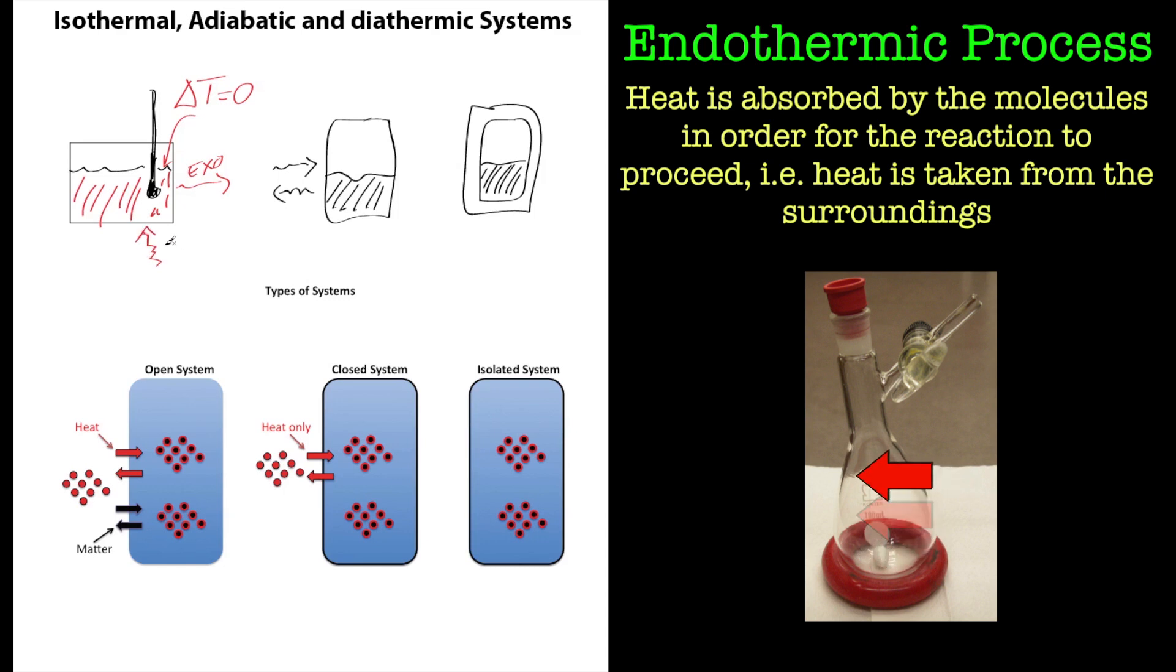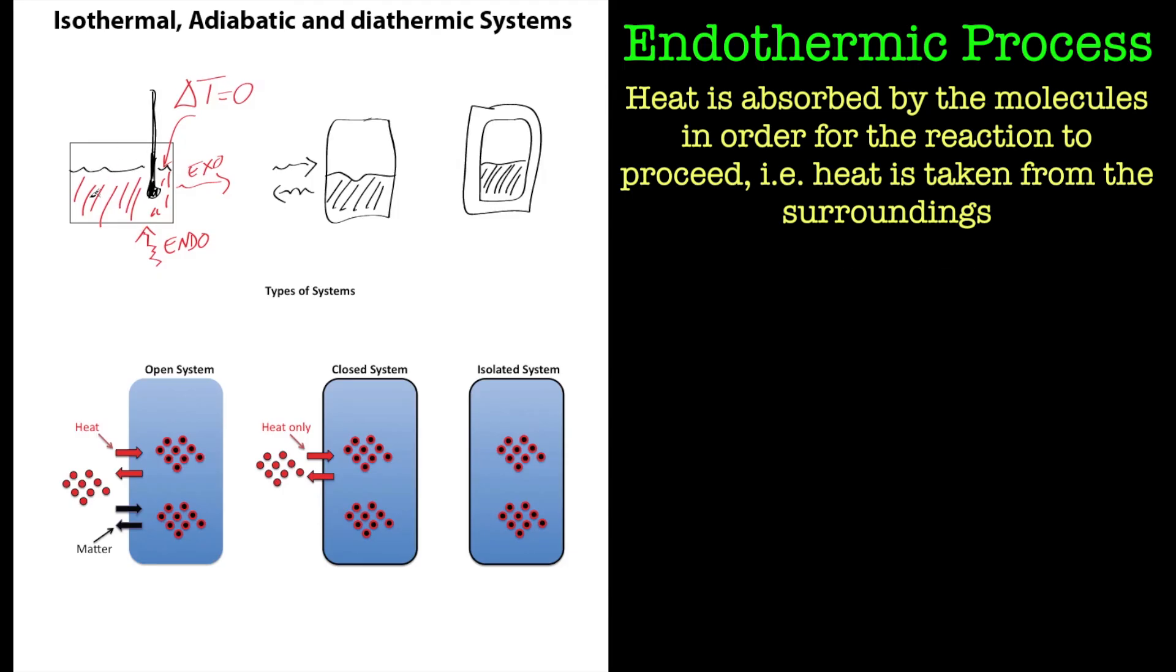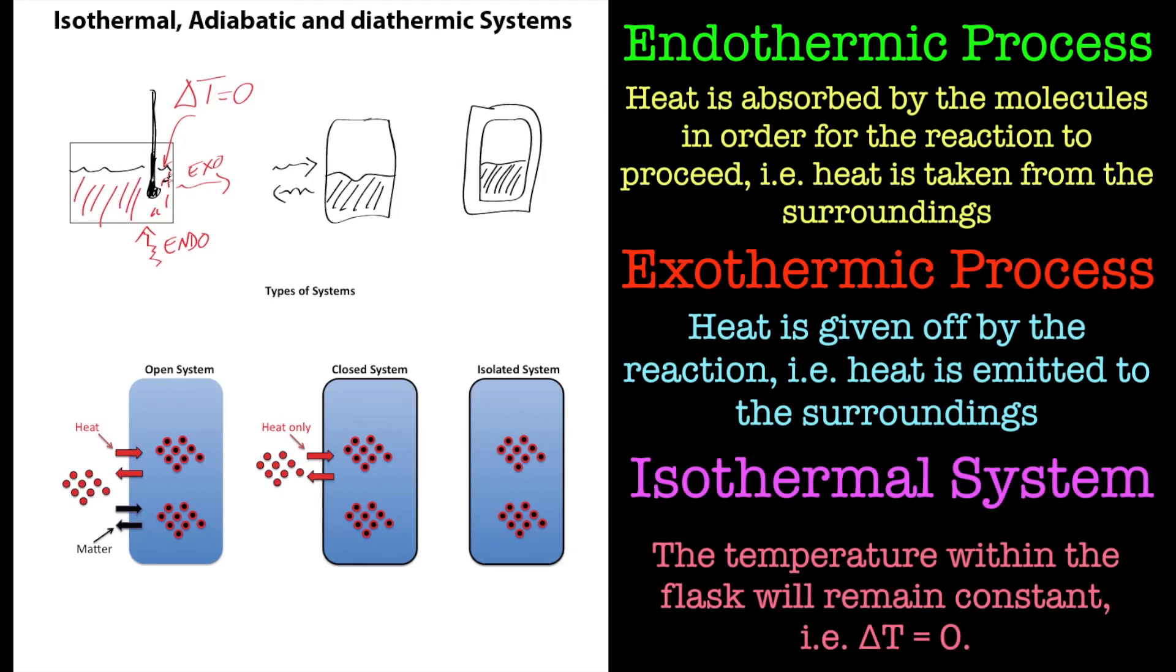So if it's an endothermic process, then heat comes in from the environment in order to keep the reaction isothermal. So isothermal just means constant temperature within our system that we're interested in, and for chemistry, that's usually a reaction.